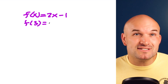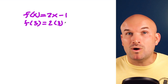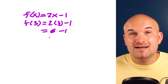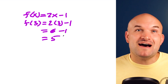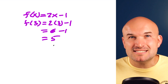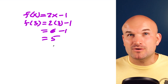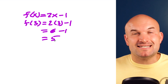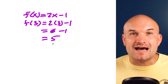I'll plug in the 3: 2 times 3 equals 6 minus 1, and therefore that equals 5. Now, it's important to understand what exactly does this mean — what does that value of 3 and 5 relate to? The point I want you to understand to understand limits is that this is a point on the graph.